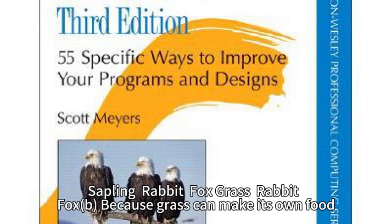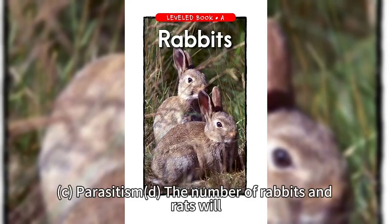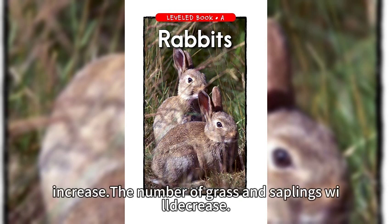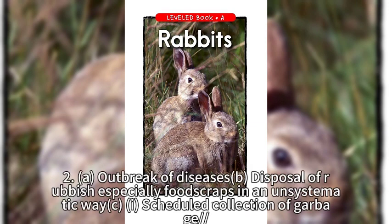Question: Ways to conserve. C. Parasitism. D. The number of rabbit populations decreases. The number of grasses decreases.